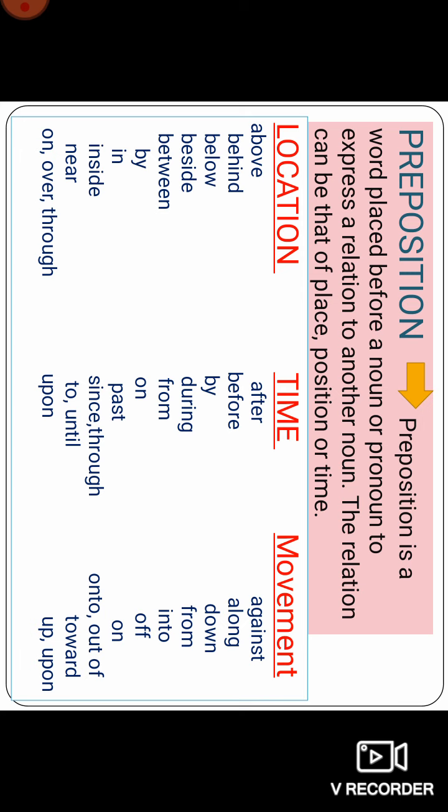For time prepositions: after, before, by, during, from, on, past, since, to, until, and upon. For movement prepositions: against, along, down, from, into, off, on, onto, out of, towards, up, upon, and so on — there are many more.